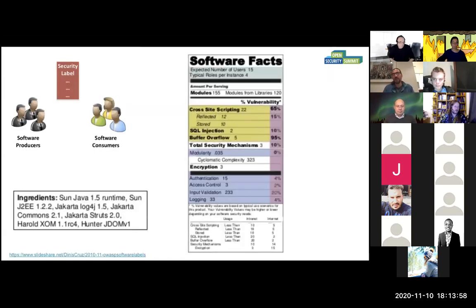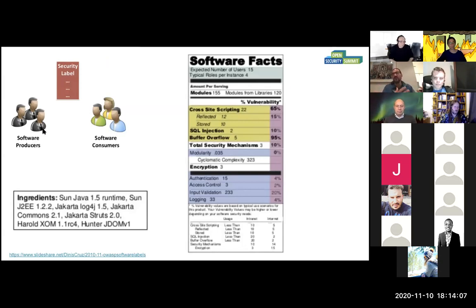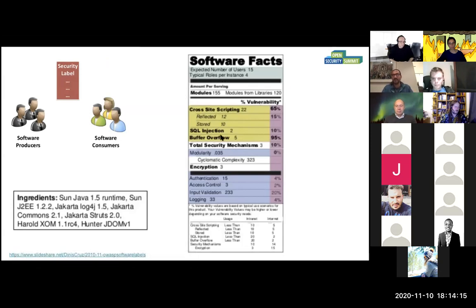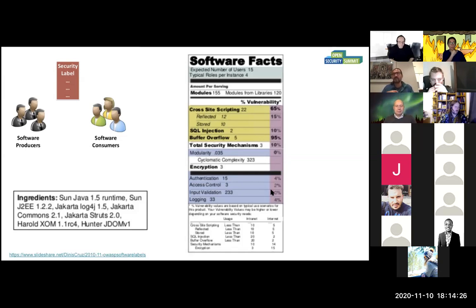The idea is to put labels between producers and consumers, between users and developers and websites — whoever creates a service used by consumers. You want to understand the ingredients: what are the vulnerabilities that exist? What do you have in there? Authentication, access controls, validation — all that stuff. This is super powerful because it lets you understand the side effects.